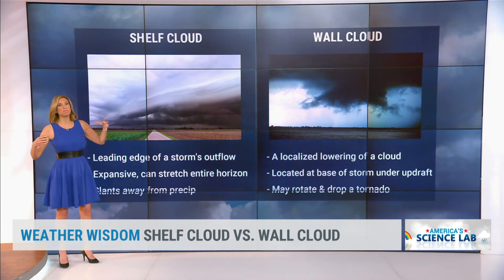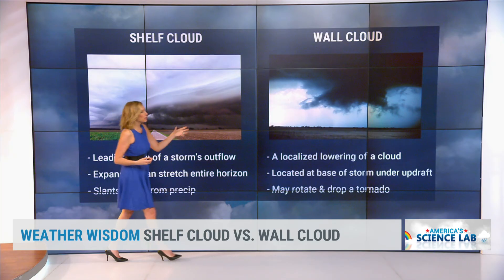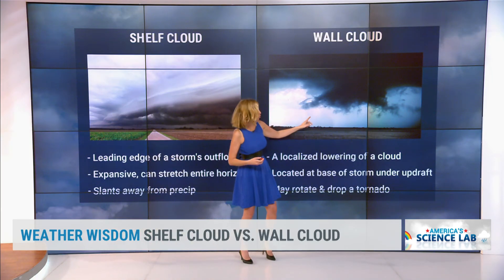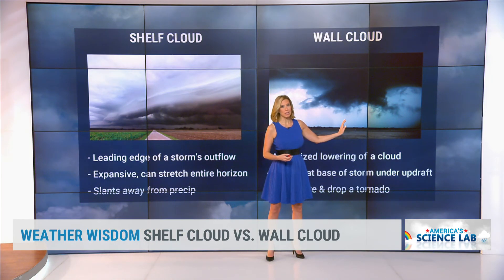Shelf clouds are typically much, much bigger in size, but a wall cloud is when you have to worry about a potential tornado. If you had one, it would drop down kind of right in the middle there.